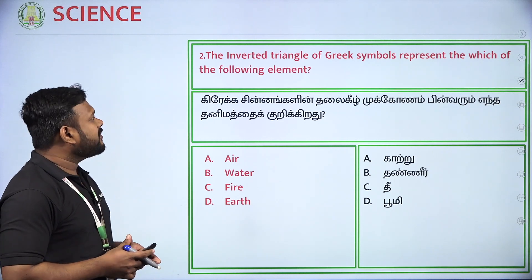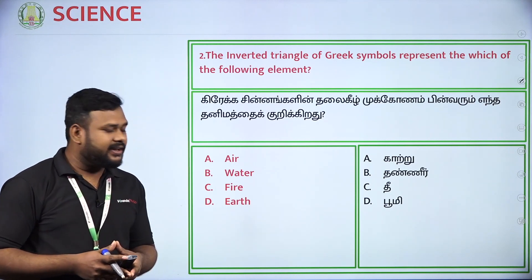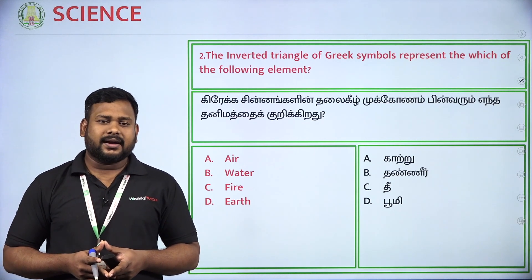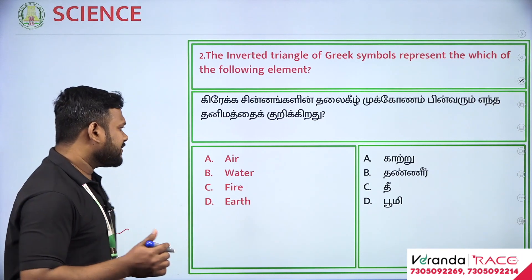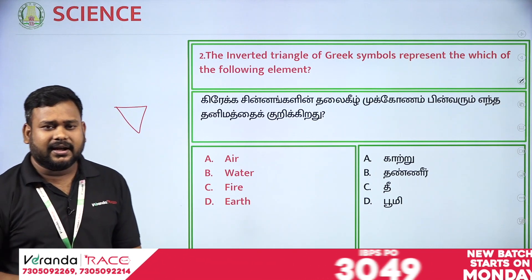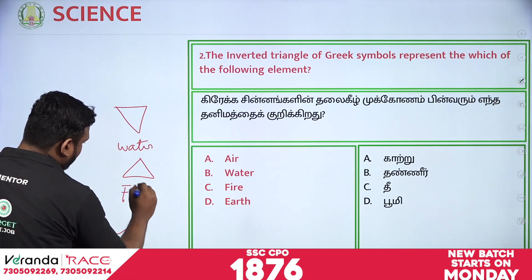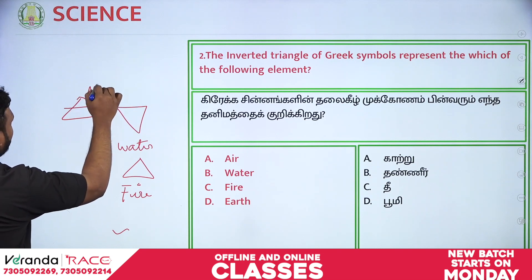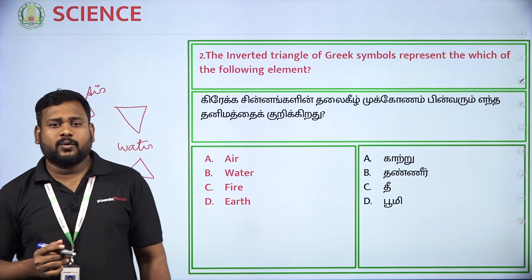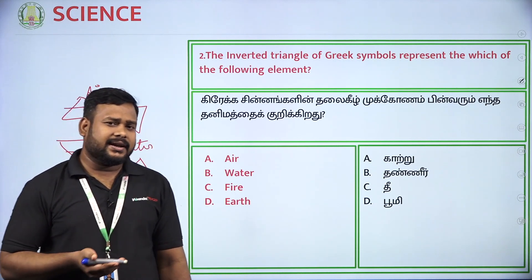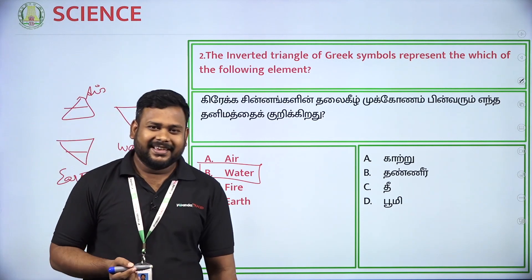The inverted triangle of Greek symbols represents which of the following elements? That is water. If you look at the Greek symbols, you will find the symbols. The triangle with a line at the base represents fire. The plain triangle represents air. The inverted triangle is called earth — wait, the inverted triangle without a line is water. So the inverted triangle — option B — is the answer.